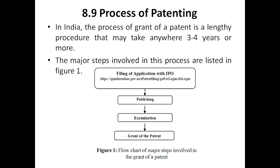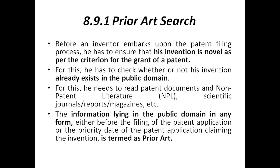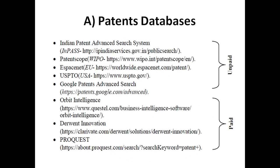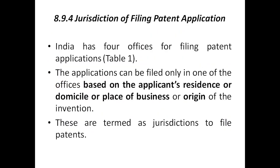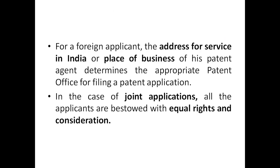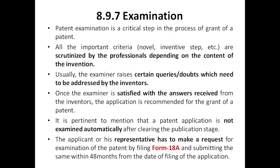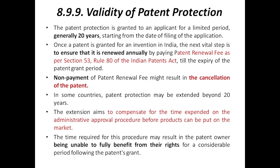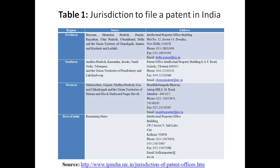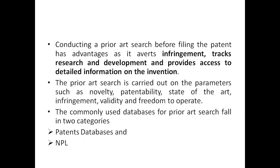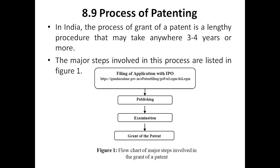We will first discuss prior art search, then patent databases and NPL, then patent application forms, jurisdiction of filing patent applications, different offices, publications, pre-grant opposition, examination, grant of patent, and finally validity and commercialization of the patent. These are the ten detailed steps, which you can generally categorize into four main steps.